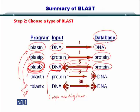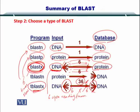If you want to use TBLASTN or TBLASTX, the number of comparisons for TBLASTX is six ORFs on the query side and six ORFs on the database side — so six times six, which is equal to 36. So 36 comparisons are made for one TBLASTX.